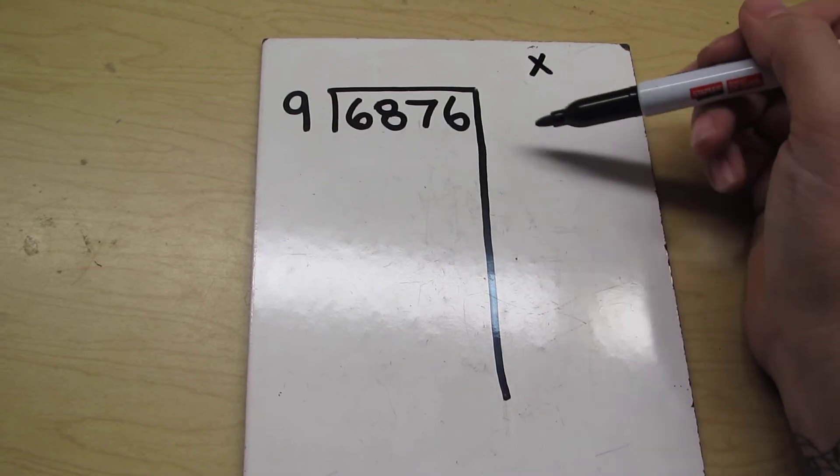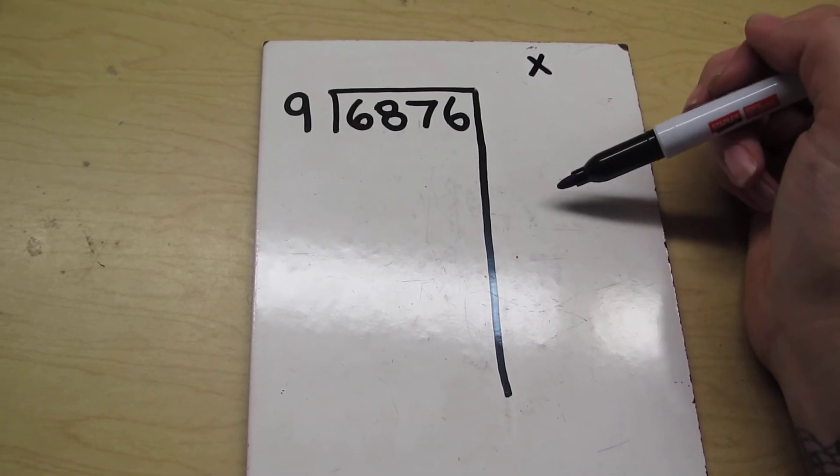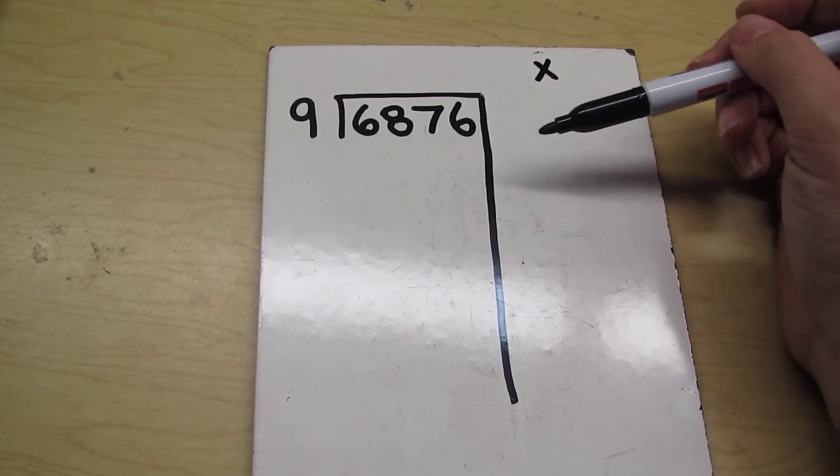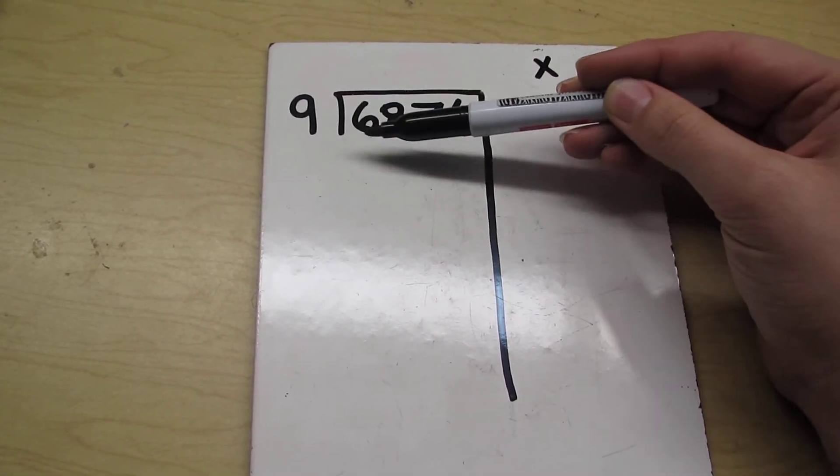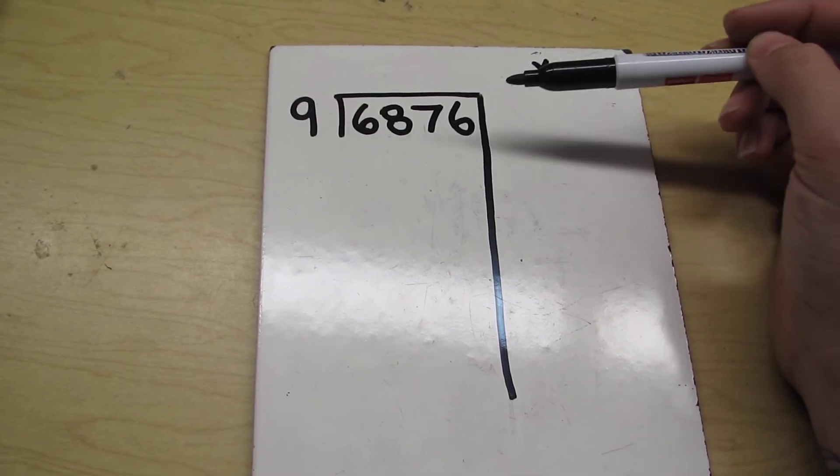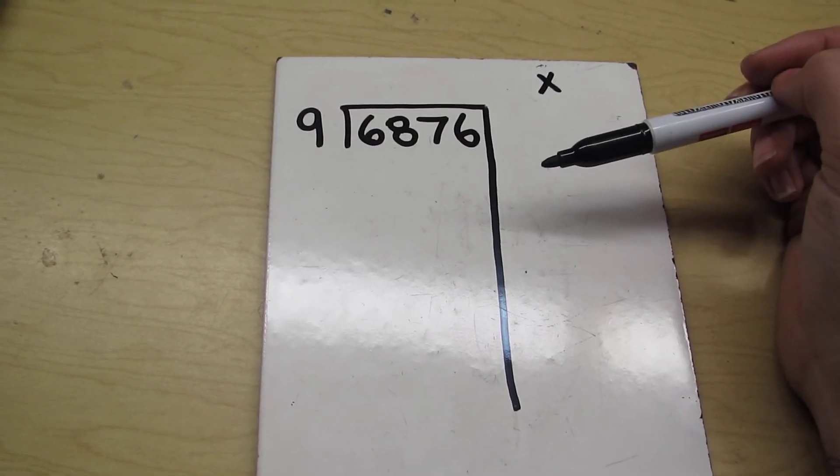So here's our multiplication. Now the point of this multiplication section is to be able to figure out what number times 9 is going to give me a number that's as close to this one as possible without going over.